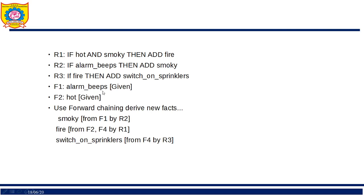To summarize forward chaining: we started with the given facts alarm beeps and hot, applied matching rules, derived smoky, then fire, then switch on sprinklers. This is how forward chaining works — starting from facts and using rules to reach a goal.